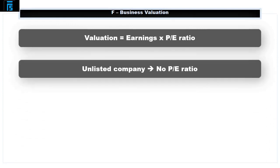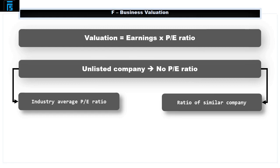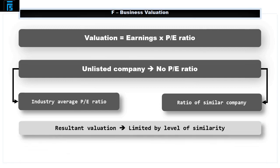However, an unlisted company will not have a PE ratio. This can be overcome by using an industry average PE ratio, or better still, using the ratio of a similar company — referred to as a proxy — that is listed. Obviously, the resultant valuation will be limited to the level of similarity that can be achieved between the target and proxy companies. It is also common practice to reduce the proxy company PE to reflect the difference in status. Adjusting downwards by a third is typical.